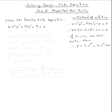So here's the method of solutions. If we have an equation a x squared y double prime plus b x y prime plus c y equals zero, then the characteristic equation is a m m minus one plus b m plus c equals zero.